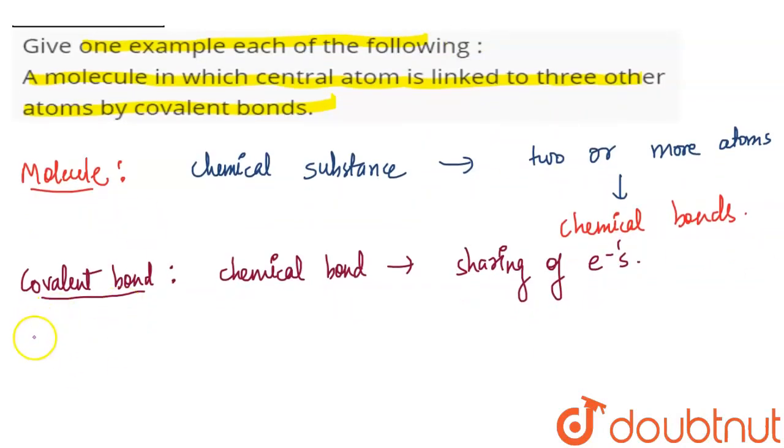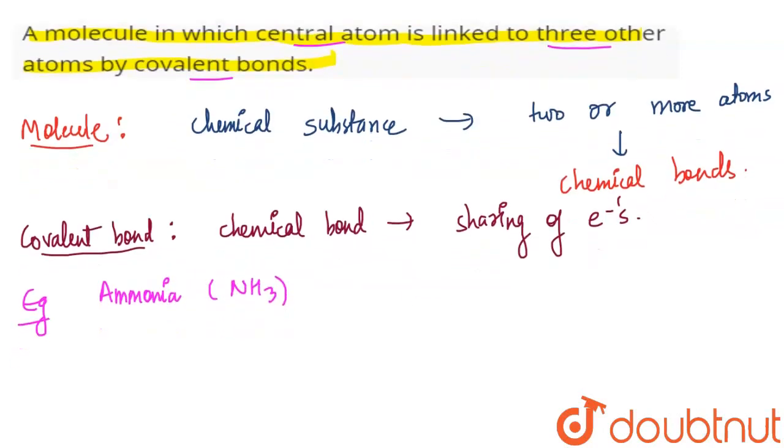So, let's show you an example of a molecule where the central atom is linked to three other atoms by covalent bonds. The example is ammonia. Ammonia's molecular formula is NH3.